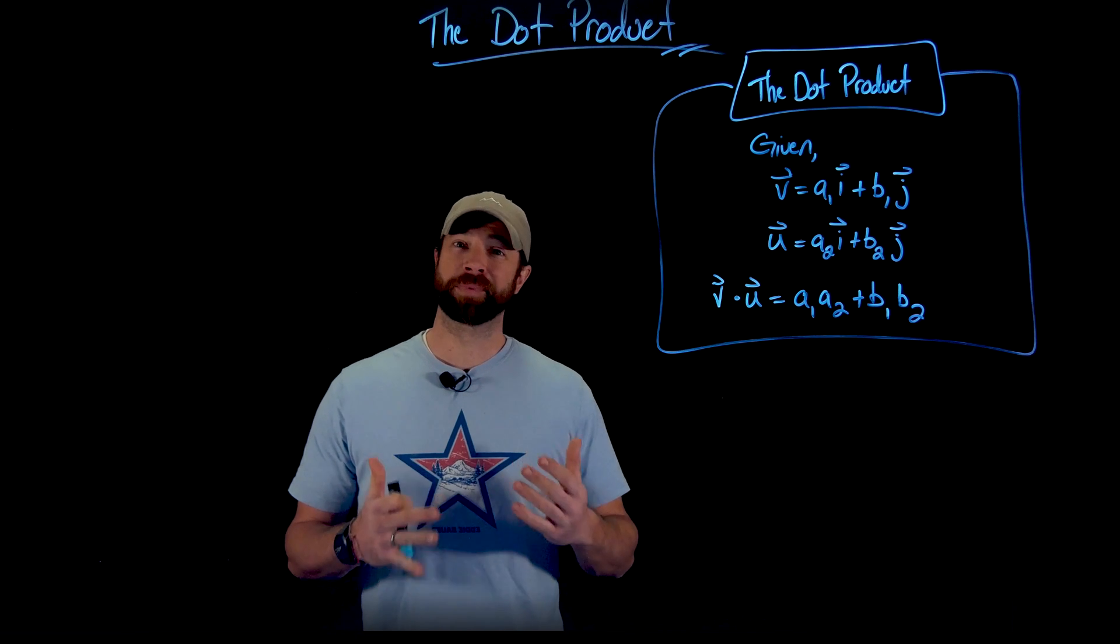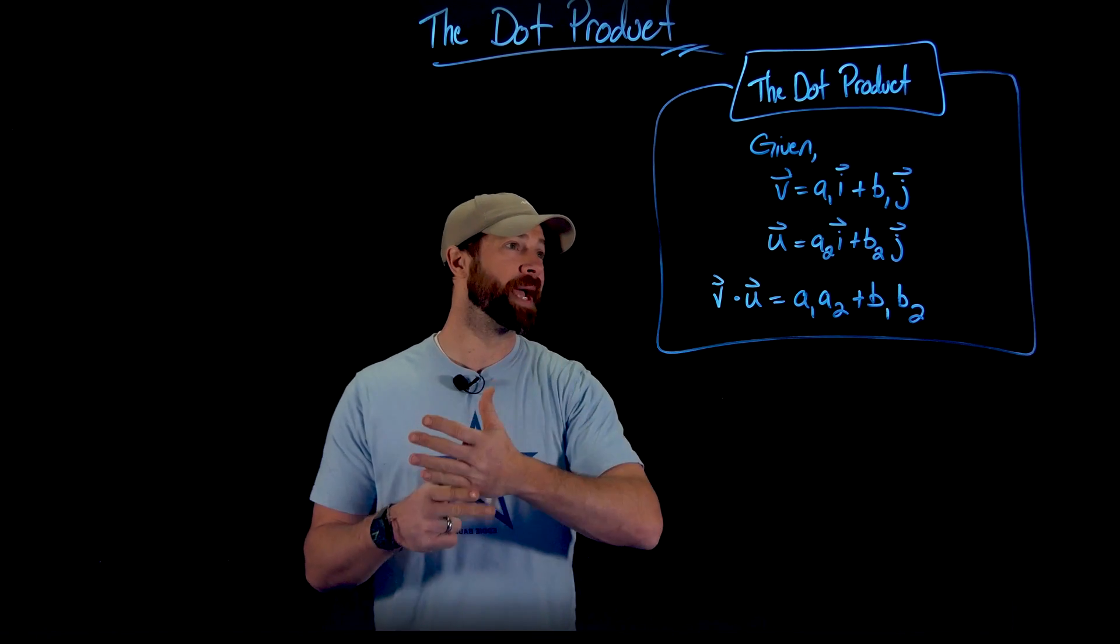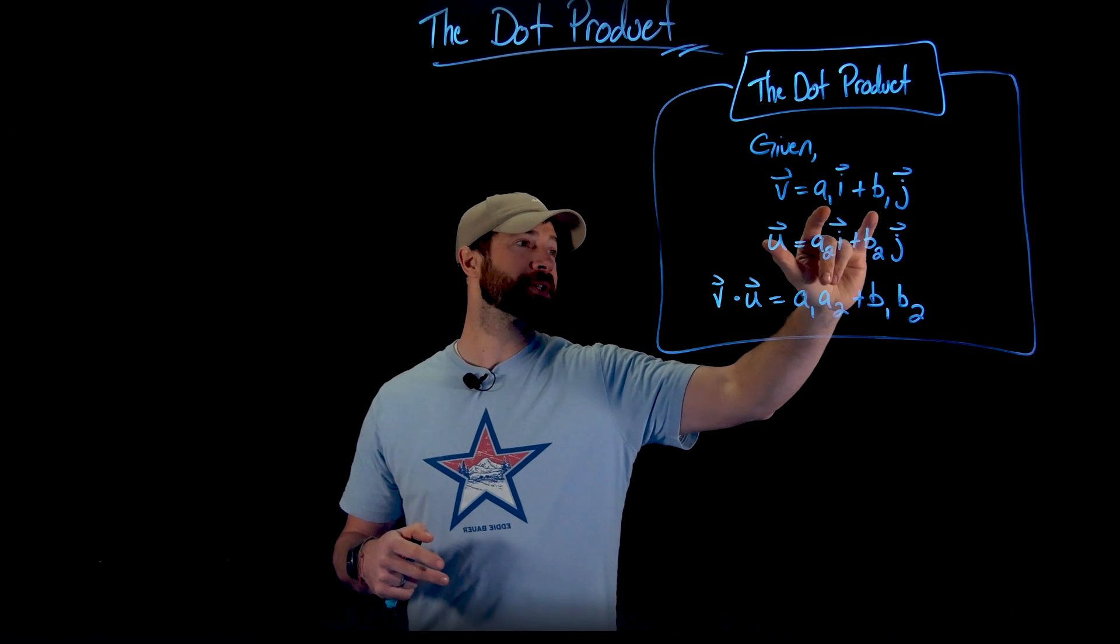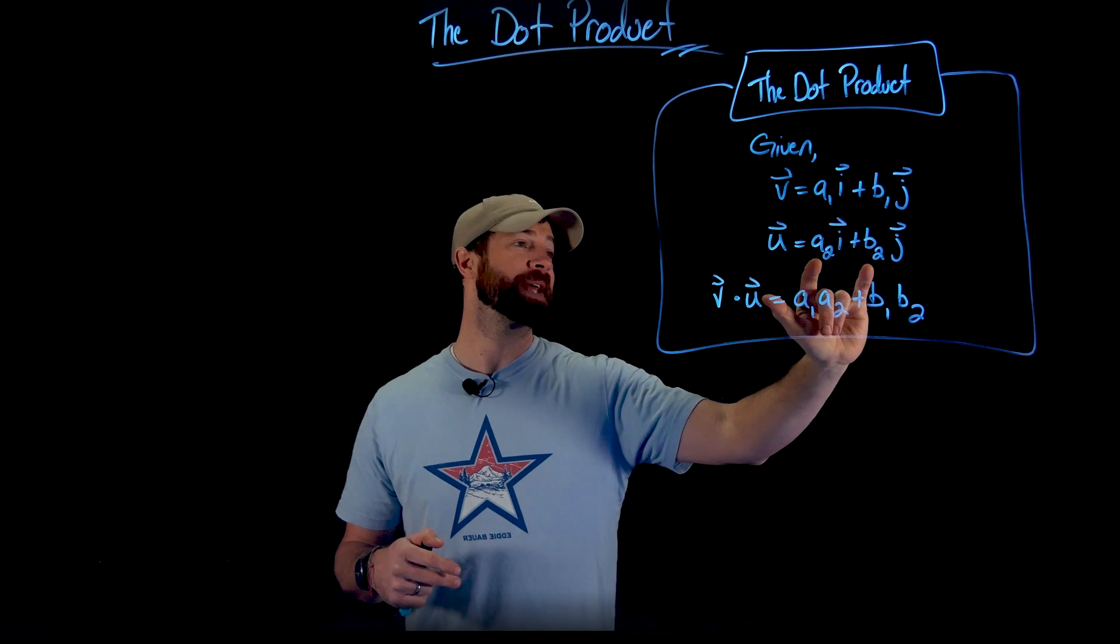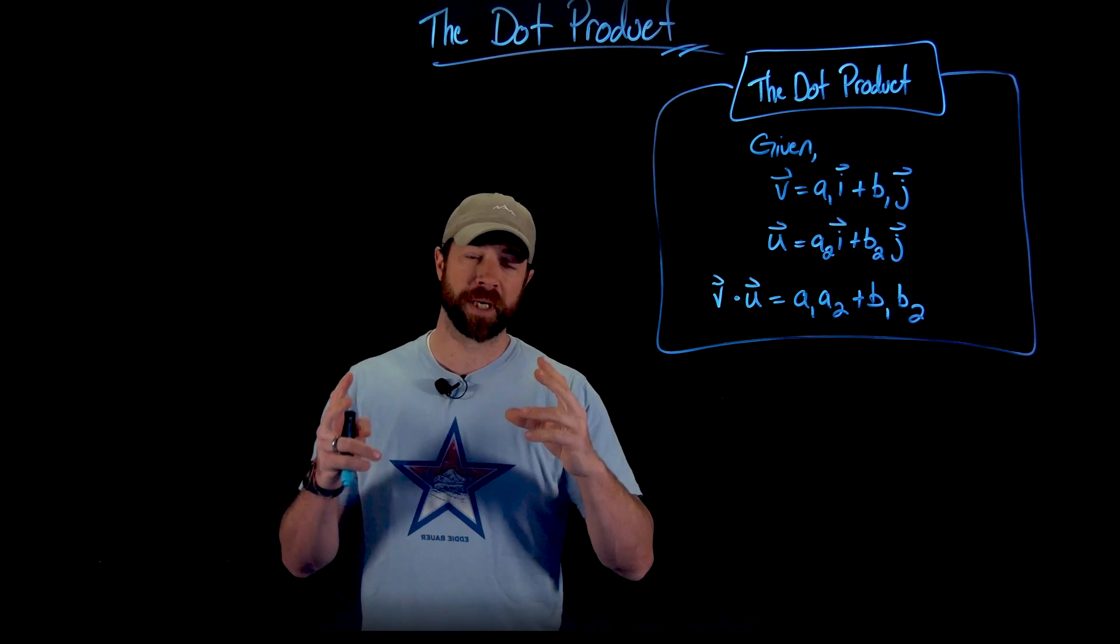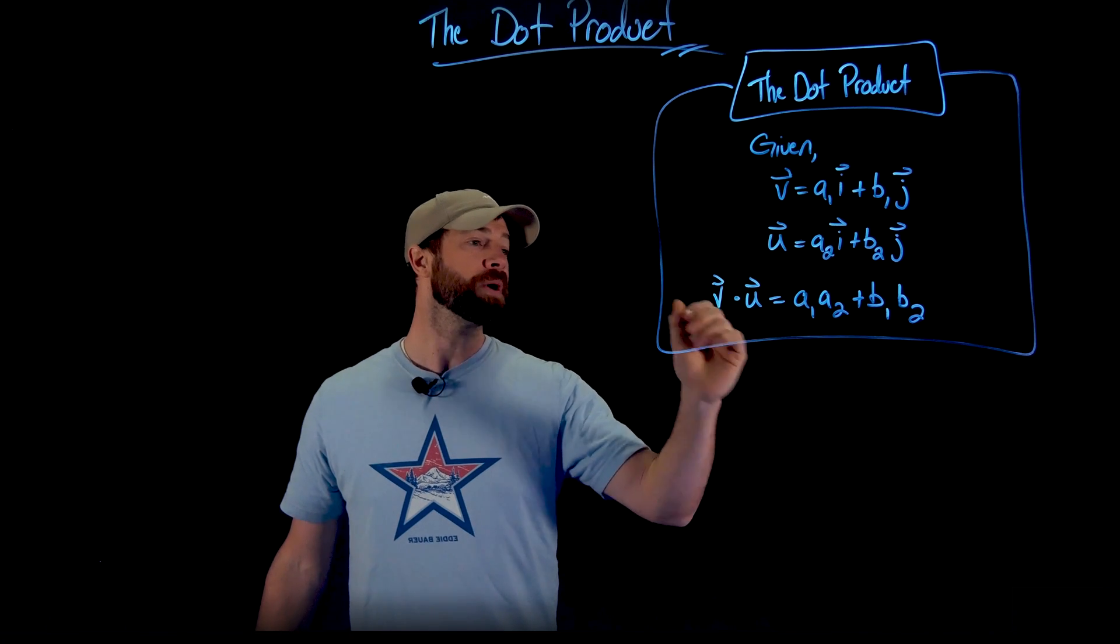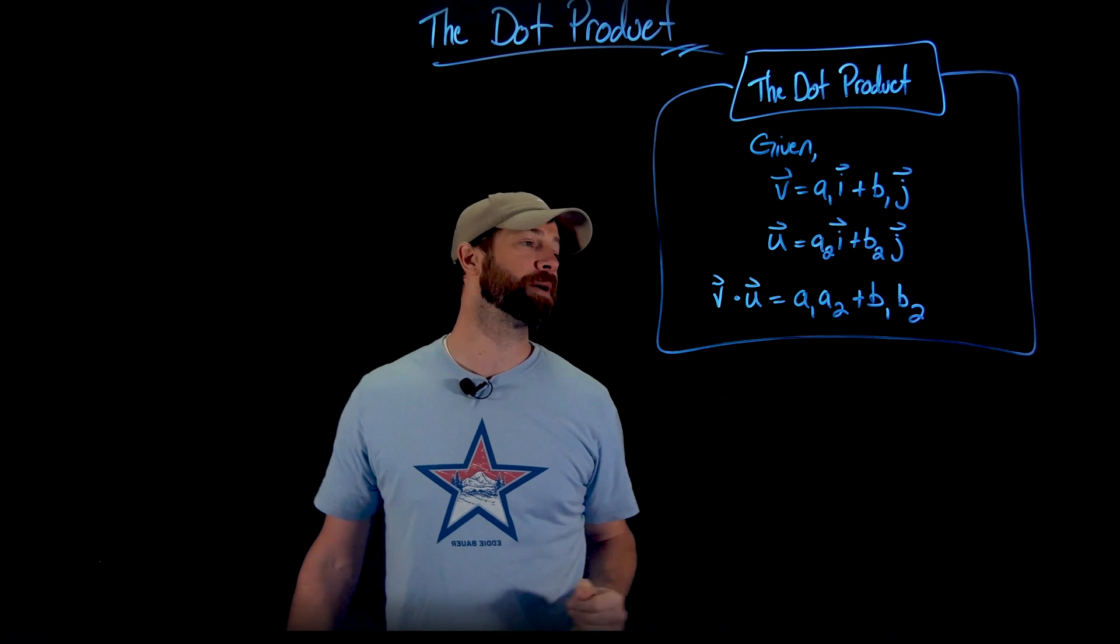The dot product is pretty straightforward. If you have two vectors described in this way, a₁i plus b₁j in both cases, denoting the a₁ and b₁ for vector v and for vector u, we have the a₂ and b₂. If you want to multiply with the dot product v and u, all you do is multiply the a components together and the b components together.